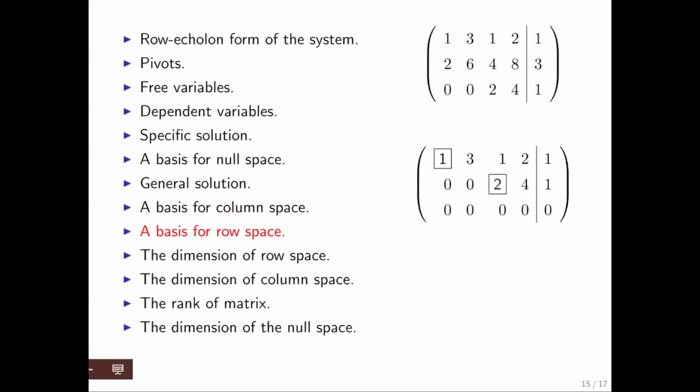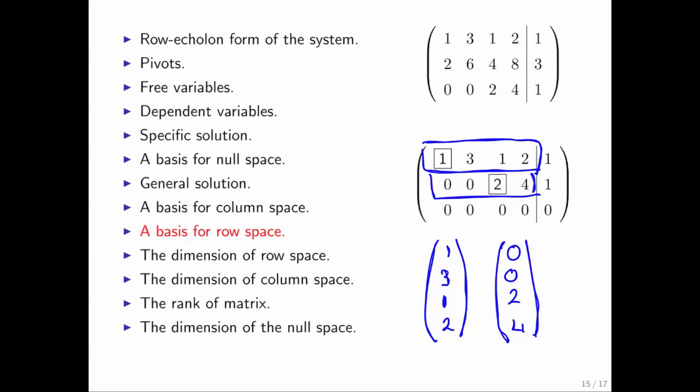We saw that there was something called the row space. The row space you find by taking the vectors from the row echelon form in which there are pivots and putting those on their side so that they become column vectors. Don't leave them as row vectors because the row space has a basis that consists of column vectors. These two vectors are a basis for the row space.